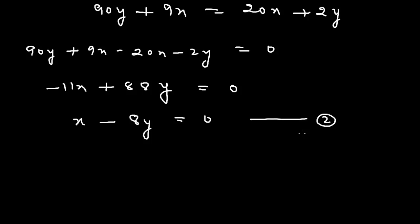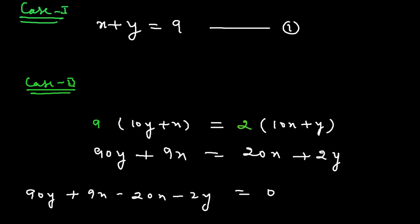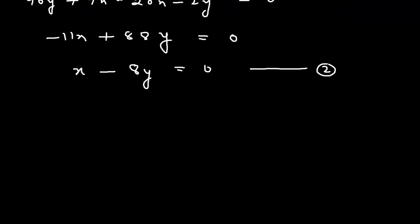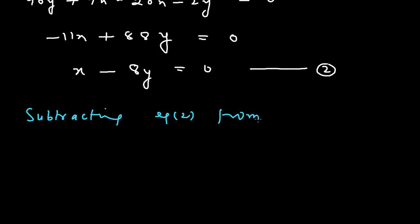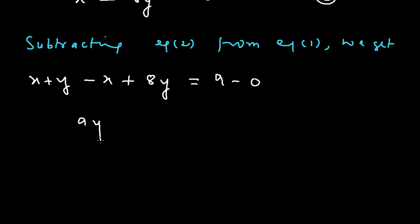Now we apply the elimination method. We observe that the coefficients of x in both equations are the same, so we subtract equation 2 from equation 1. We get: (x + y) − (x − 8y) = 9, which gives 9y = 9, therefore y = 1.